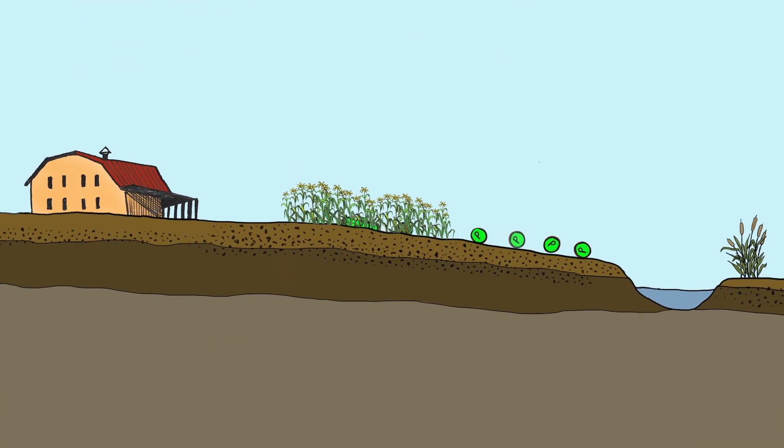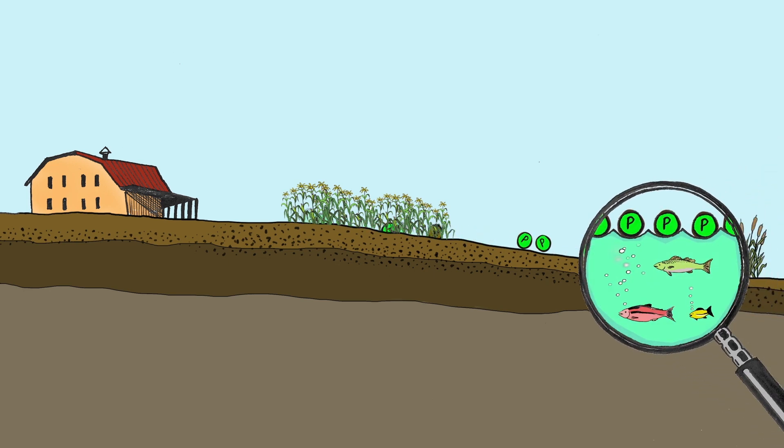Phosphate can move off of a field dissolved in water or attached to eroded soil particles flowing into lakes and streams where it can promote algae growth.